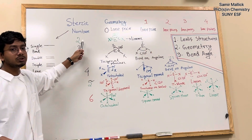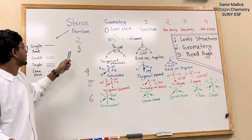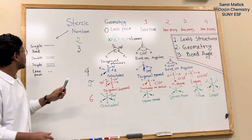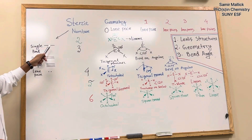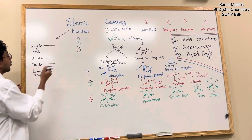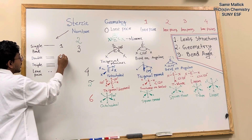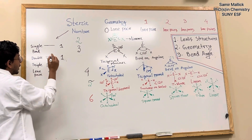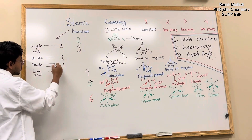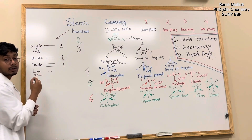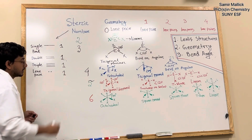First, to determine the steric number, you need to know that a single bond counts as 1, a double bond also counts as 1, a triple bond also counts as 1, and a lone pair also counts as 1.